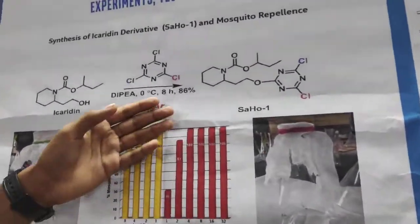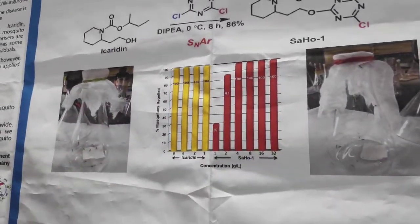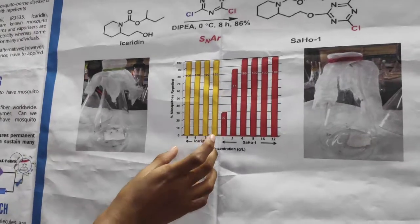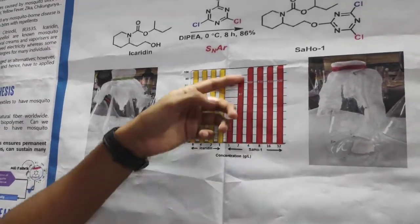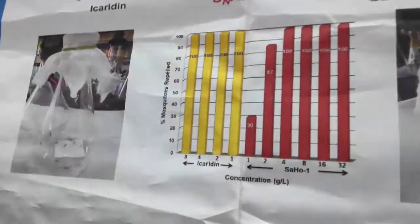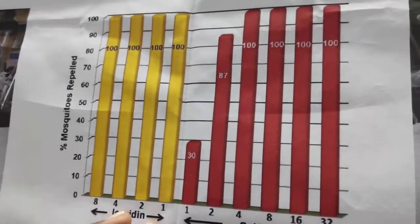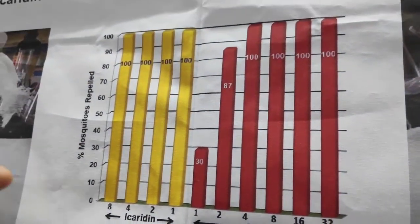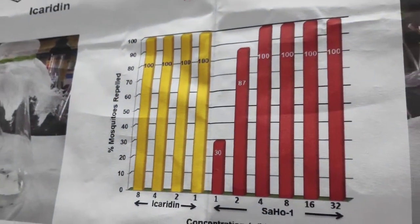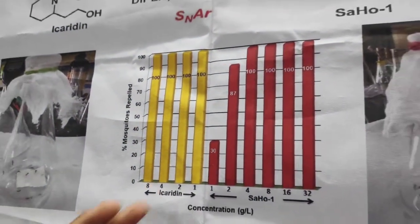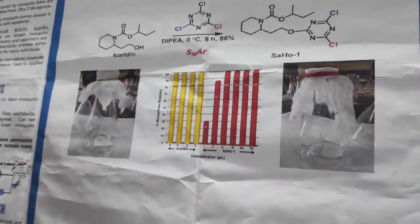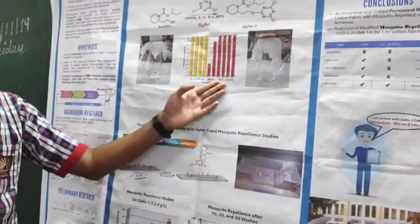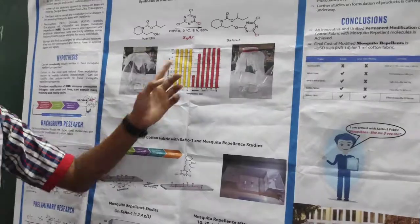The testing data of SAHO-1 is shown here. I compared the data of SAHO-1 and icaridin. SAHO-1 at 4 grams per liter concentration showed 100% repellence, whereas icaridin at 1 gram per liter itself showed 100% repellence. This is because the modification caused it to lose some properties, but repellence could be retained. The advantage of SAHO-1 is that it can be attached to the cotton cloth.